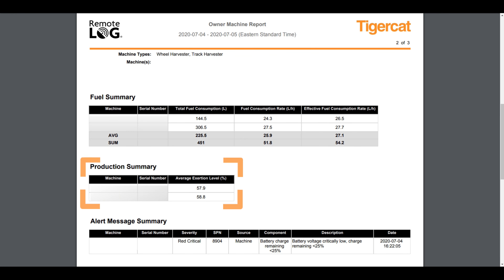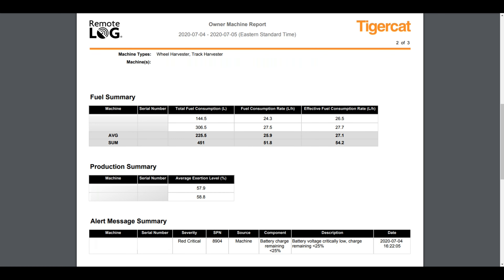This table provides a quick glance of the overall exertion of machines. The Alerts Summary table provides a complete listing of all alerts detected and reported by telematics from various systems on the machine. A short description hints as to how to proceed further with troubleshooting.